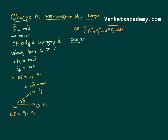Let us consider a scenario where there is a rigid wall and a ball of mass m moving with a velocity v, striking the wall and coming back with the same velocity v. I want to calculate what is the change in the momentum. P final minus p initial: p final is mv and p initial is also mv, but in the opposite direction, so we write it as negative mv. The change in momentum becomes automatically 2mv.